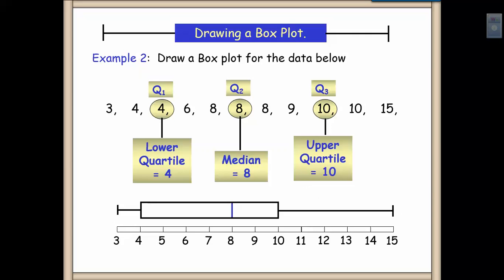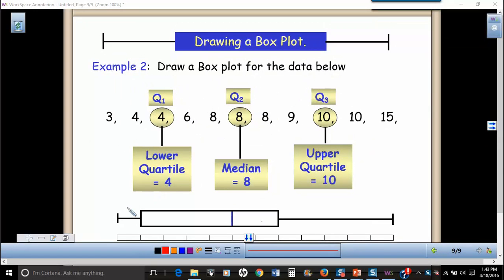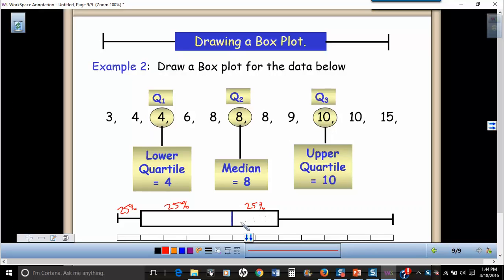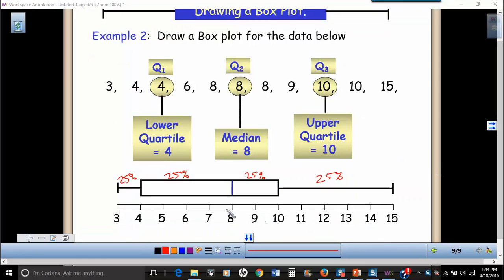One of the features that I do want to point out is that in each section of a box plot, each section contains about 25% of the values. So this lower whisker, this portion of the box below the median, this portion of the box to the right of the median, and this upper whisker all contain about 25% of the values.